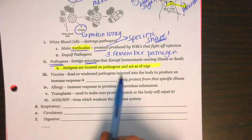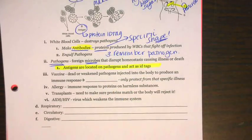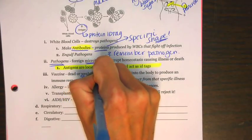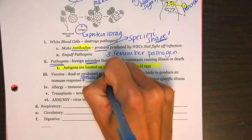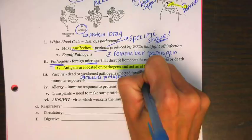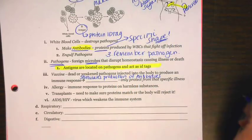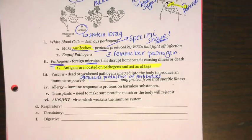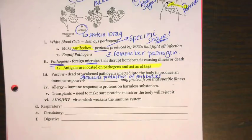A vaccine is a dead or weakened pathogen injected into the body to produce an immune response. An immune response stimulates production of antibodies — meaning, make antibodies. It only protects you from a specific illness because every illness has different antigens. If you get the flu, it has antigen A. If you get the chicken pox, that has antigen B. Therefore, you don't have antibodies against antigen B — your body needs to make them.